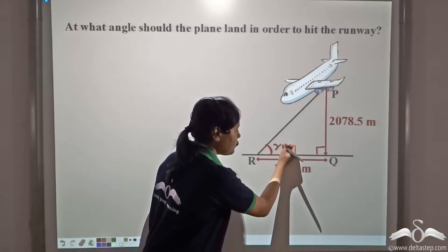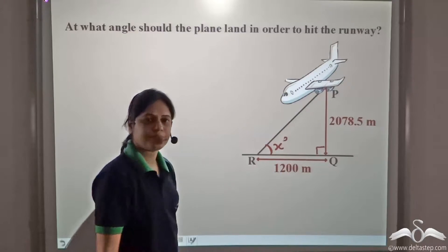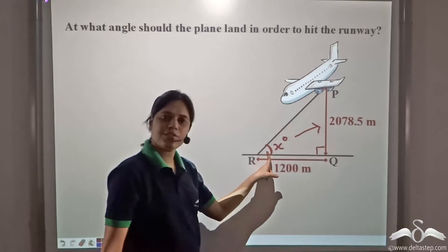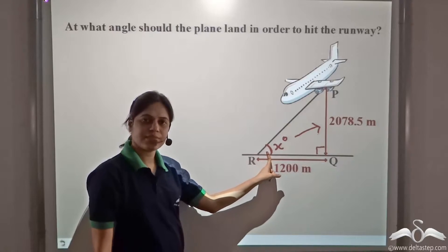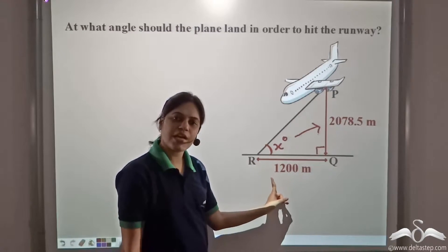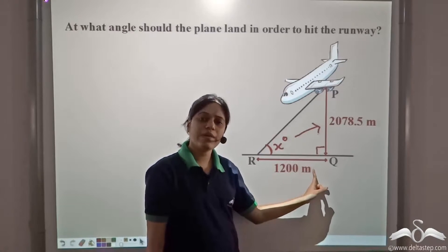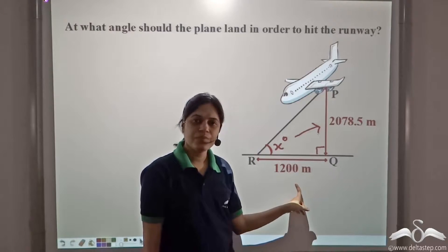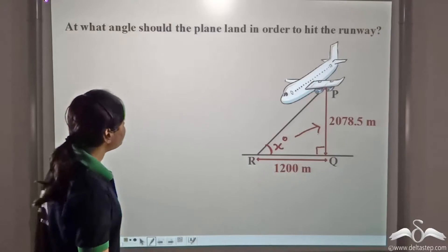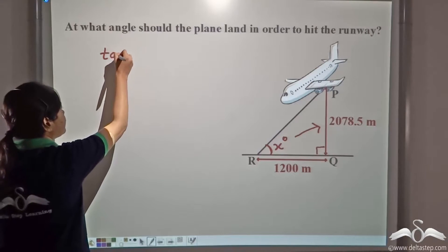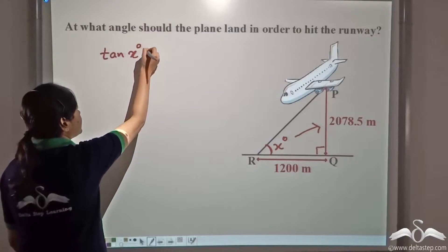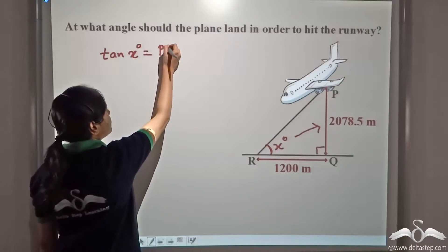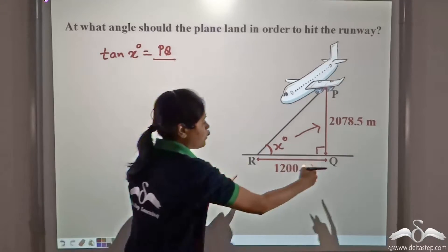Let this angle be x degree. Considering this angle is x degree, this side is the opposite side of x. This side is the adjacent side of x. We use the trigonometric ratio which combines the opposite side and the adjacent side which is tan. So, tan of x degree is equal to opposite by adjacent that is PQ by QR.